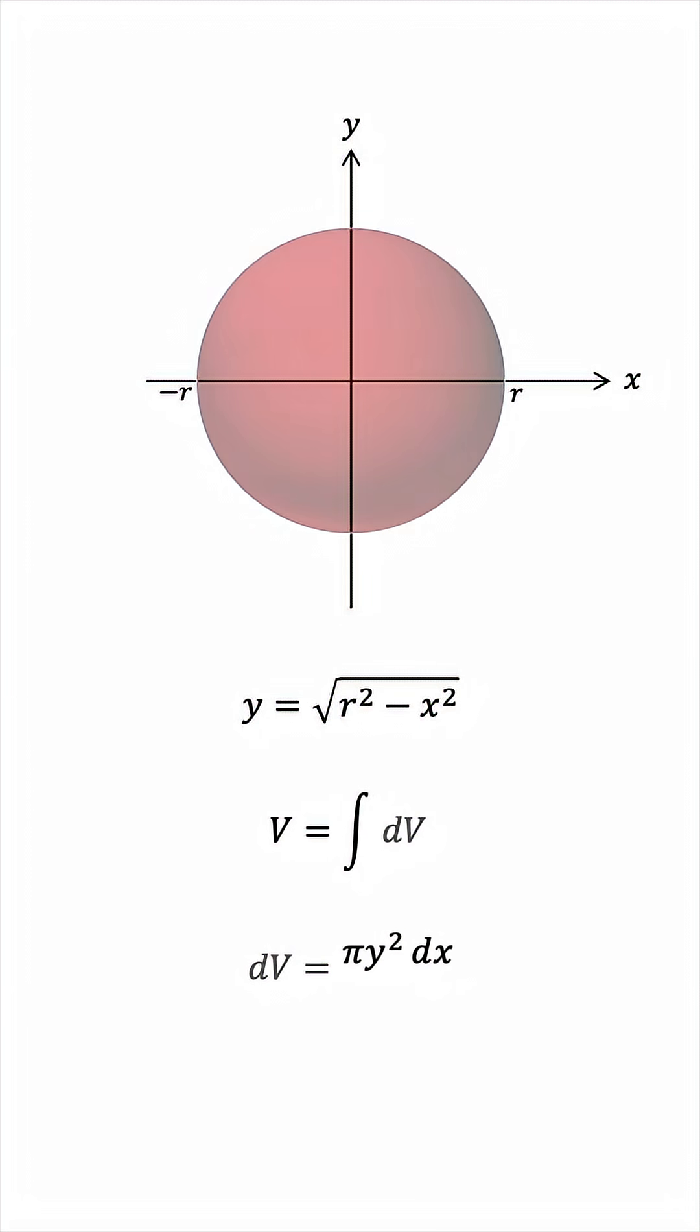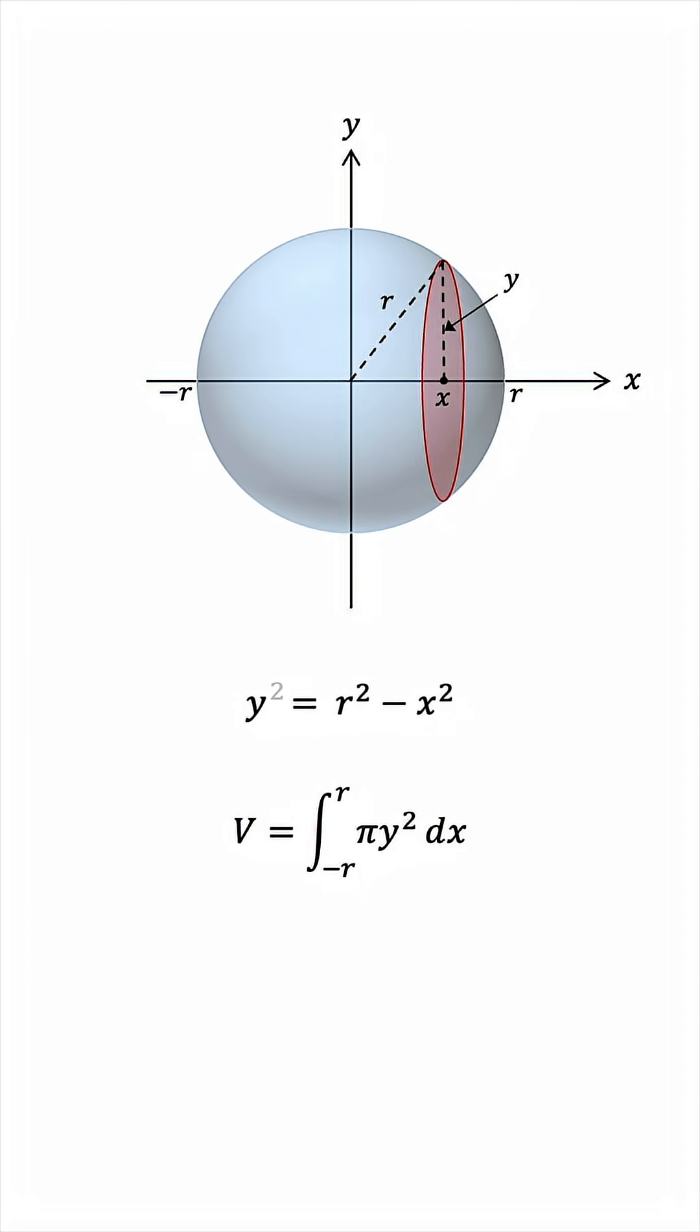We'll integrate pi y squared dx. The bounds of integration are from negative r to r, and y squared is r squared minus x squared. This is an even integrand, so we can integrate it from 0 to r and multiply by 2.